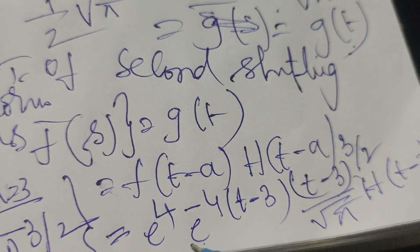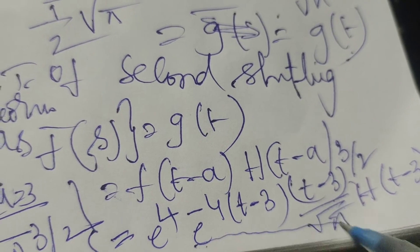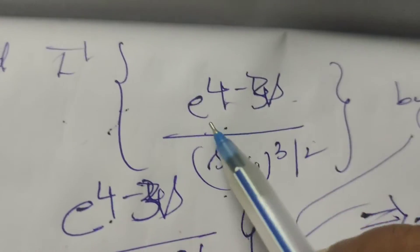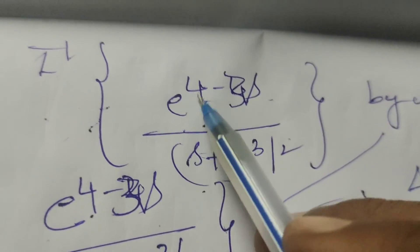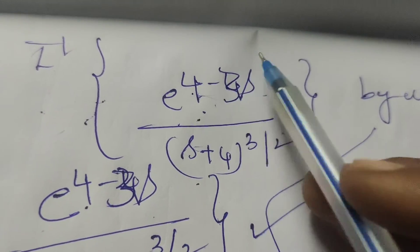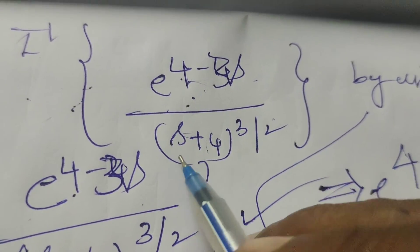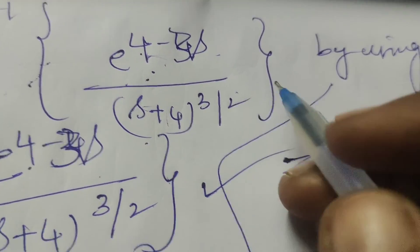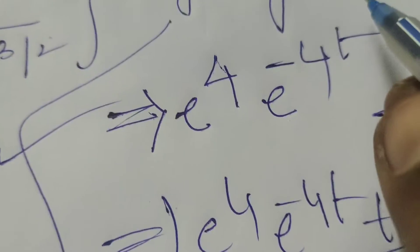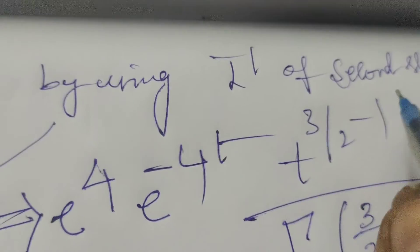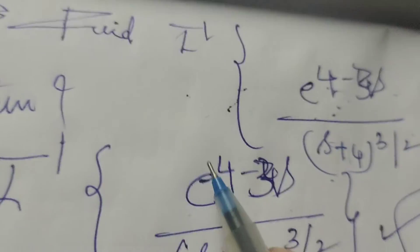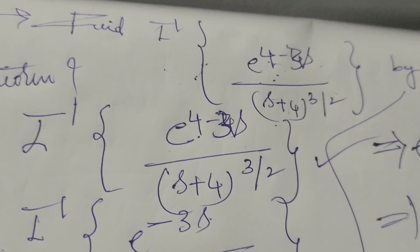This is the solution of the given problem — the inverse Laplace transform of e^(4-3s) / (s+4)^(3/2), obtained by using the inverse Laplace transform second shifting theorem. Thank you.